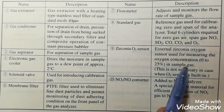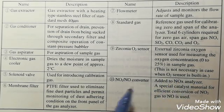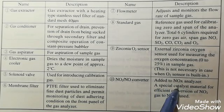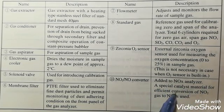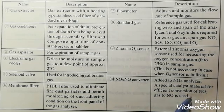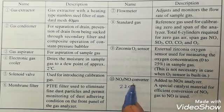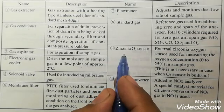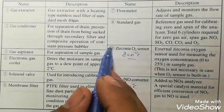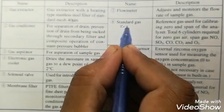So we will give the standard gas for zero and span. Zirconia O2 sensor is an external zirconia oxygen analyzer used for measuring the oxygen concentration in sample gas. NO2 to NO converter is used to convert NO2 into NOx using a special catalyst material for efficient conversion. This NOx NO2 to NO converter uses 220 degrees centigrade, and the zirconia uses 800 degrees centigrade.